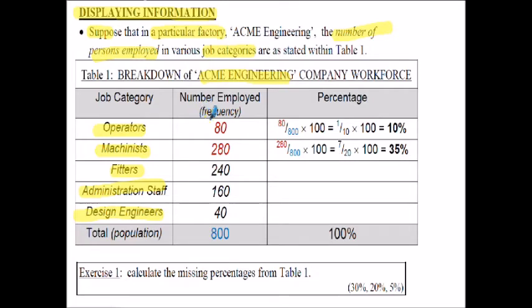Looking at the frequency we have 80 operators, 280 machinists, 240 fitters, 160 administration staff and 40 design engineers. When we total the frequencies we get 800. So the total, or if you like the population of the company, is 800 staff.